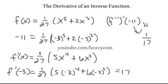So the derivative of F inverse at negative 11 is 1 over 17. Remember the key is finding that number to plug in to get negative 11 out. Then all we have to do is take the derivative, plug that number in, and take the reciprocal of whatever that number is.